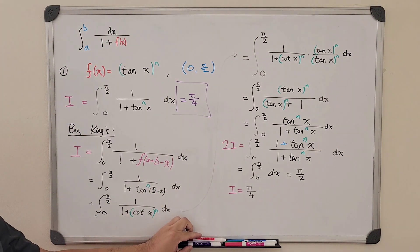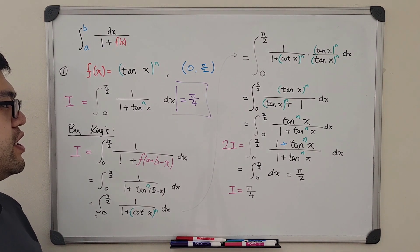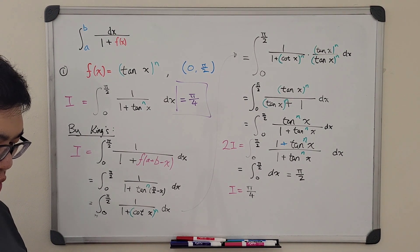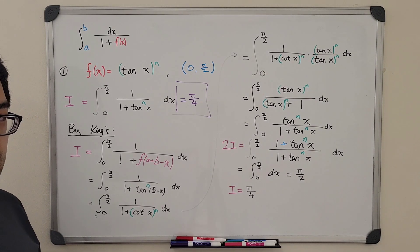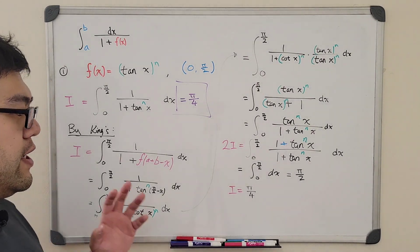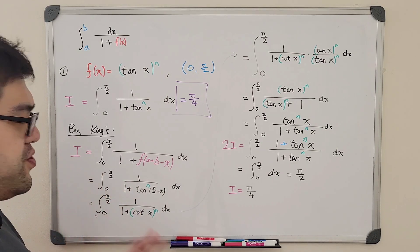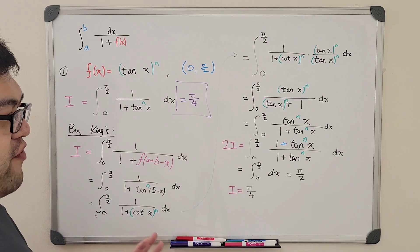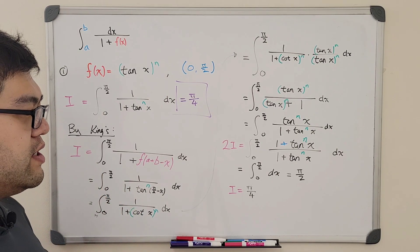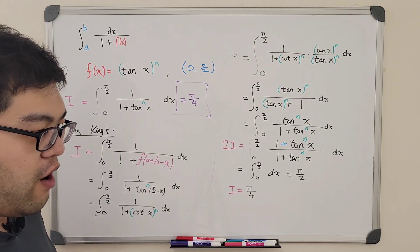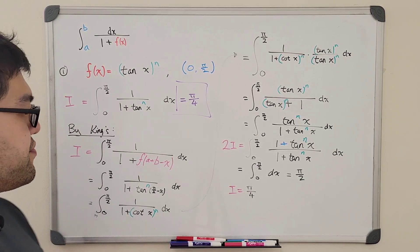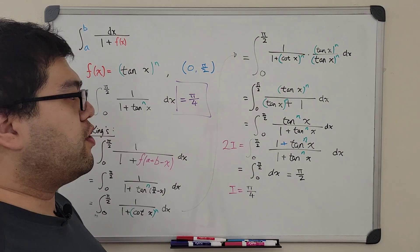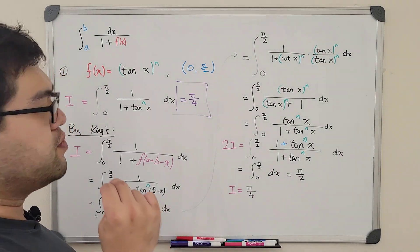This is the first example of how we use the king's property to rewrite an integral into a nice form so we can evaluate it indirectly, without finding the antiderivative and using substitution. I'll leave part two for tomorrow.